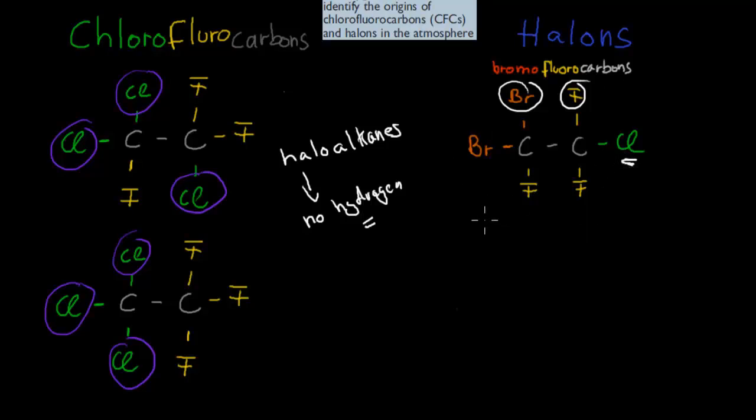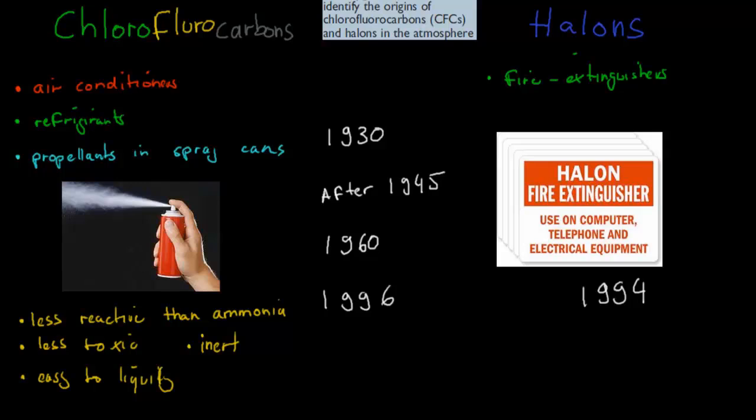I mentioned those two in the last video. The reason why I mention all this is because we have to identify the origins of chlorofluorocarbons, or CFCs, and halons in the atmosphere. And one of the most popular CFCs that was used was not these here, but was actually something that looked similar to this. And that is CFC-11, and we're going to talk about that more in the future. This is the one that is most commonly used. We have to talk about the origins.